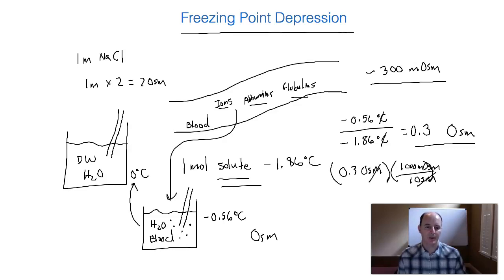And now we have 300 milliosmols as our concentration. And so it turns out that blood freezing at negative 0.56 degrees Celsius is the set point for human blood, 300 milliosmols.